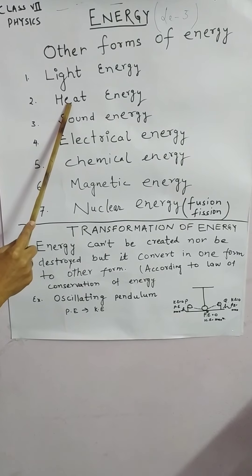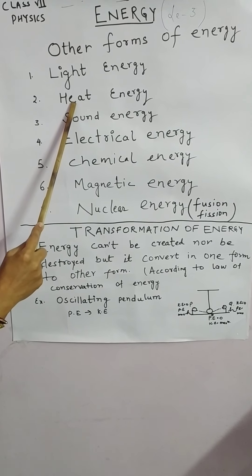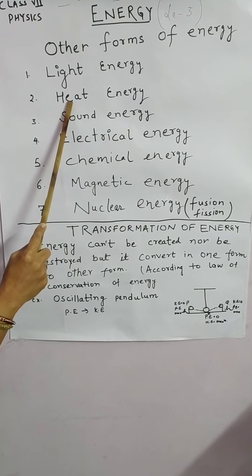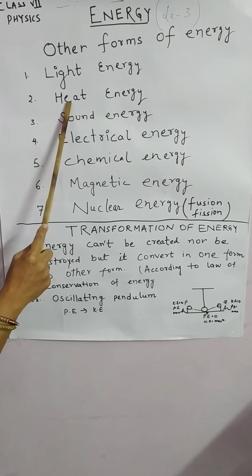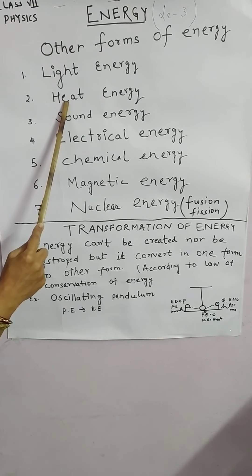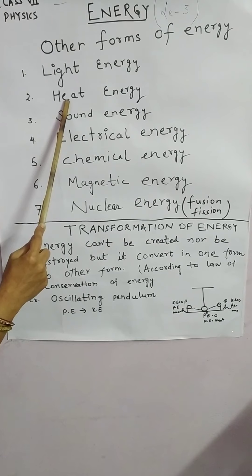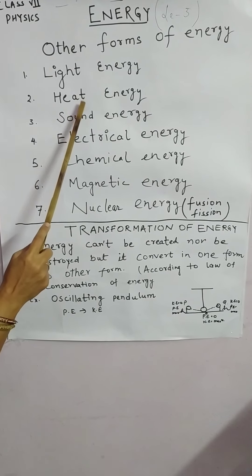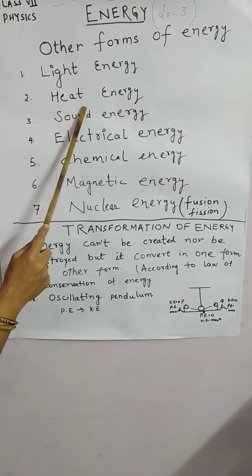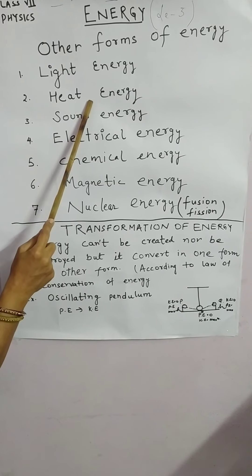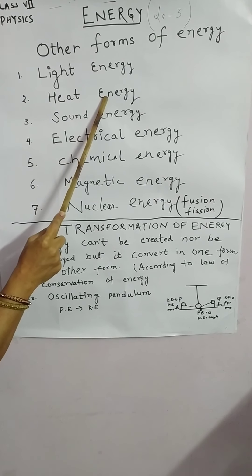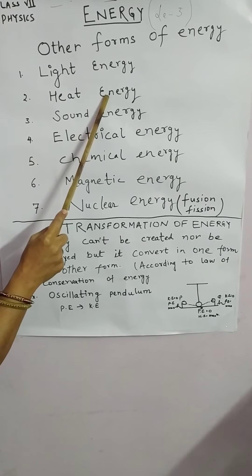Second, heat energy. Heat is a form of energy which makes any object hot or cold. It is also known as thermal energy. When a body is heated its energy increases, and vice versa, when it is cooled its energy decreases.